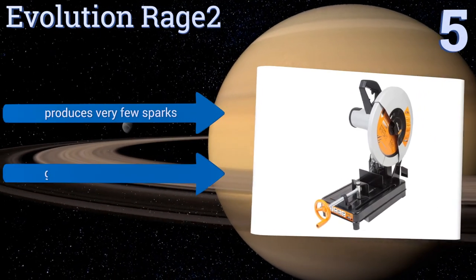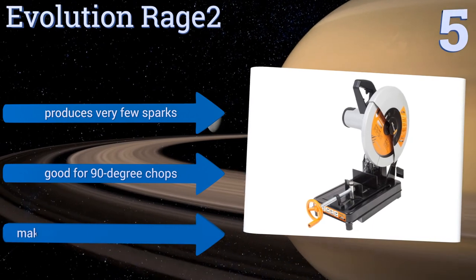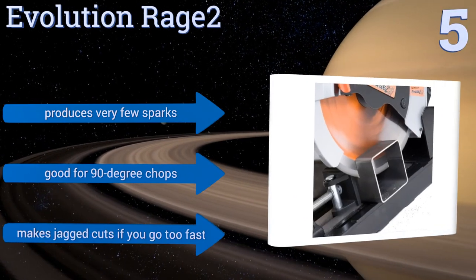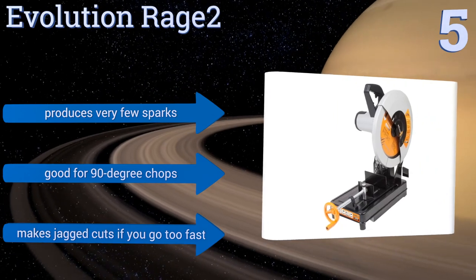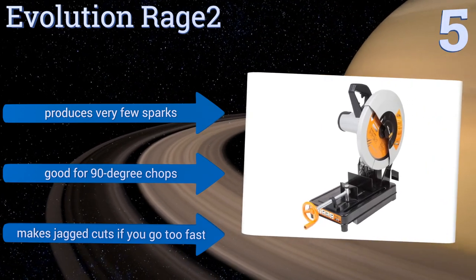It also has a high-torque gearbox that puts less stress on the motor, so it won't trip the breaker every time you work on thicker metals. It produces very few sparks and is good for 90-degree chops, but it makes jagged cuts if you go too fast.